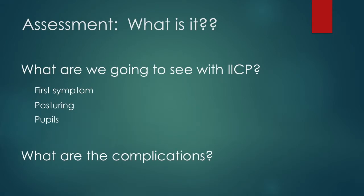So how do we assess for increased intracranial pressure? Besides our monitoring systems, there are going to be first signs. Typically, you're always going to see a change in level of consciousness. No matter what the age group, it's always going to be an alteration in LOC. But if you're a child, you might see projectile vomiting as one of those first symptoms, versus adults who might have a headache. They might vomit, but it will be later. You might also see headaches and vomiting, especially in children.